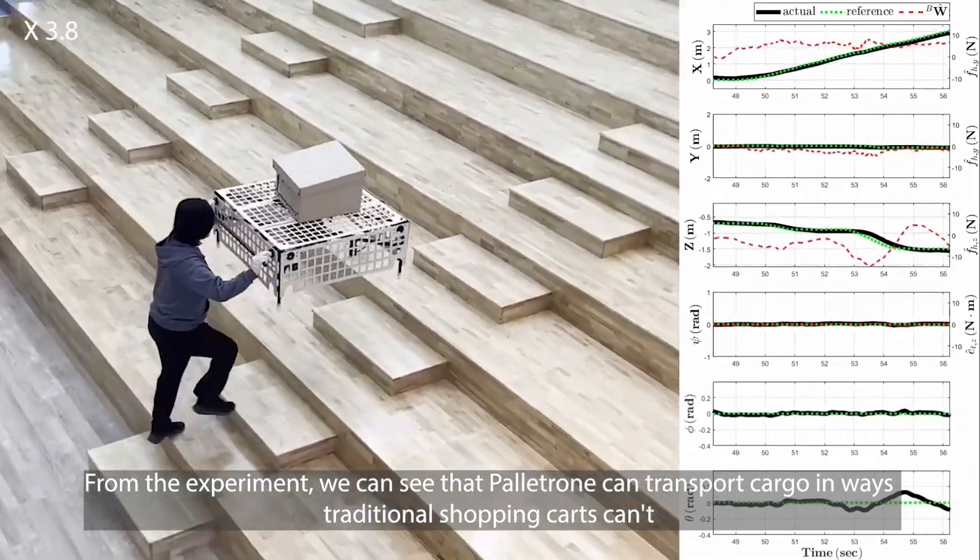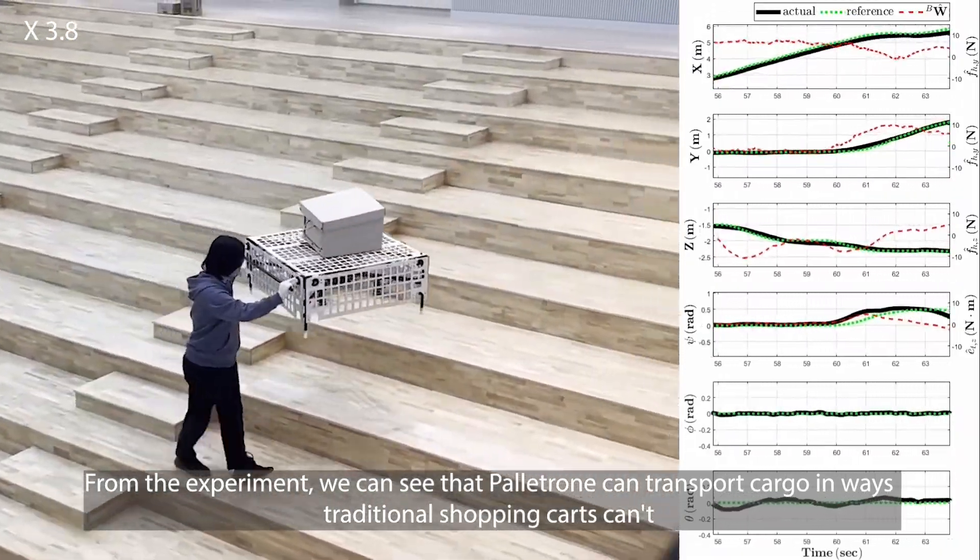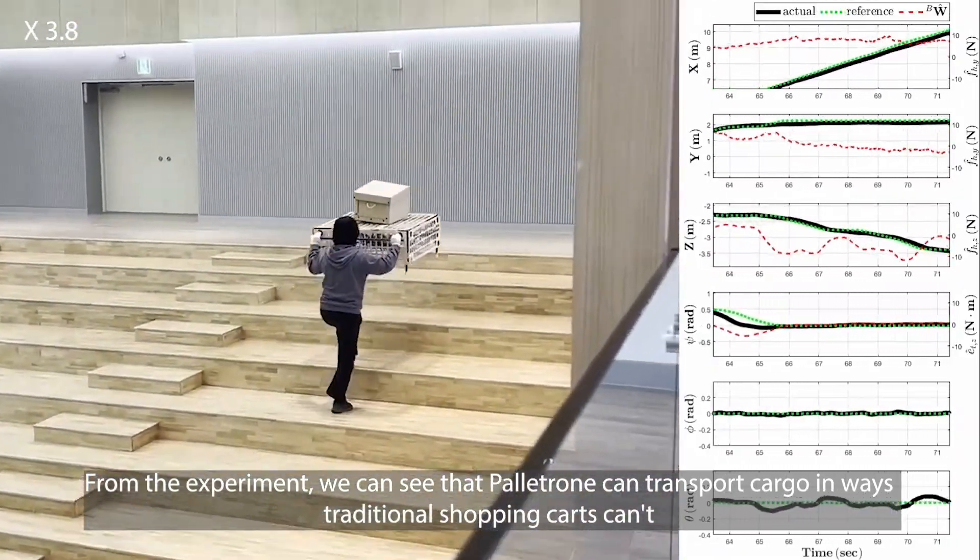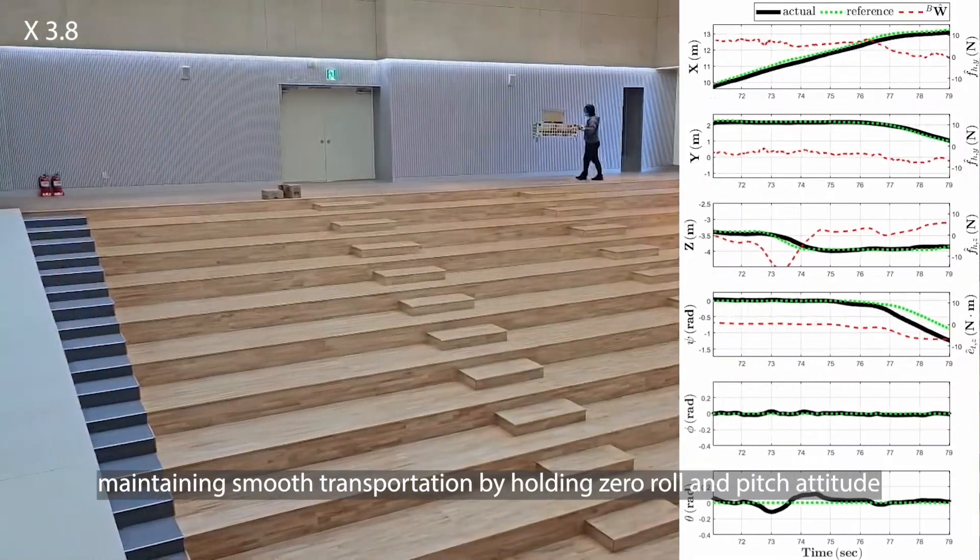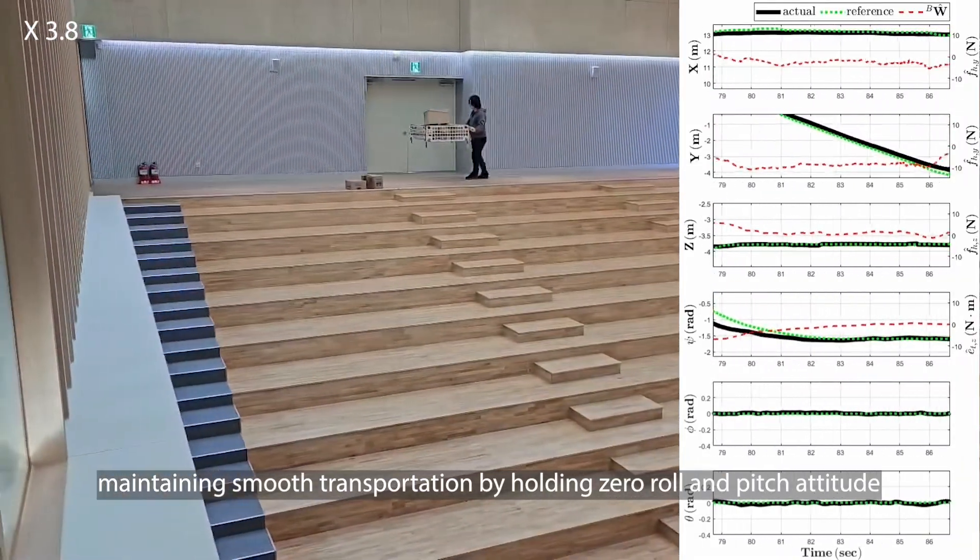From the experiment, we can see that Palletron can transport cargo in ways traditional shopping carts can't, maintaining smooth transportation by holding zero roll and pitch attitude.